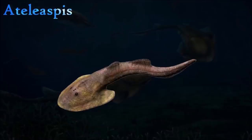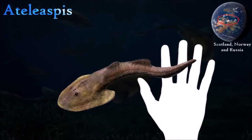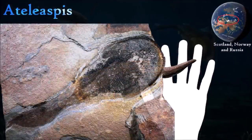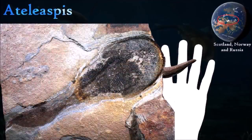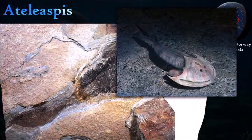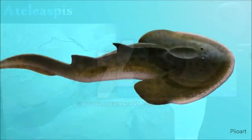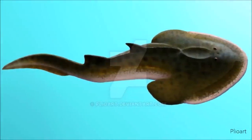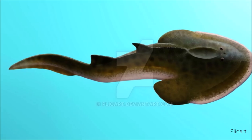Ateleaspis was a primitive osteostrachan thought to have lived in sheltered seas or river mouths. It is the earliest known fish with paired appendages — its pectoral fins. It had two dorsal fins; the front one was covered in scales, and the hind fin was larger with webbed spines. Ateleaspis's head was protected by a bony shield, and bony scales covered the head, which suggests it was a bottom feeder.